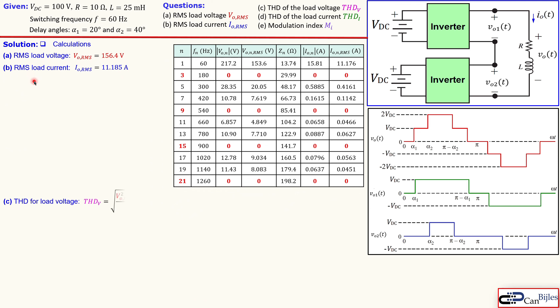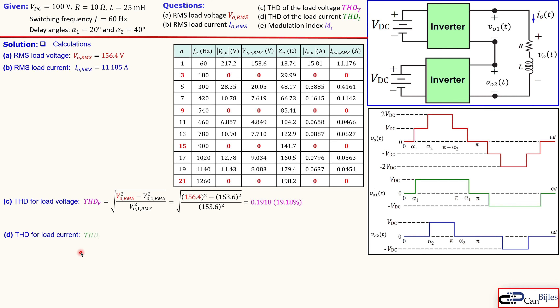For the THD of load voltage, we use the total harmonic distortion formula: VRMS divided into the harmonic content relative to the fundamental. Substituting the known VORMS and the first harmonic RMS value gives 0.1918, approximately 19.2%. For the load current THD, substituting the RMS load current and first harmonic RMS current gives 0.0401 — approximately 4%, which is quite small.